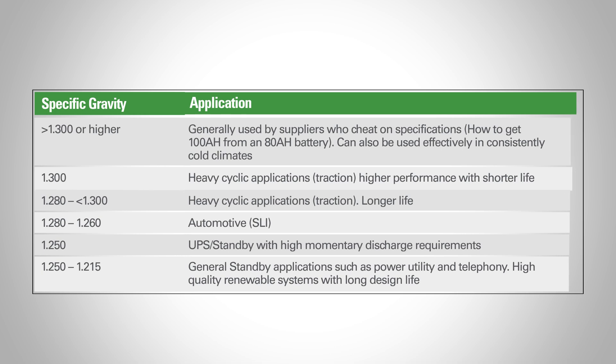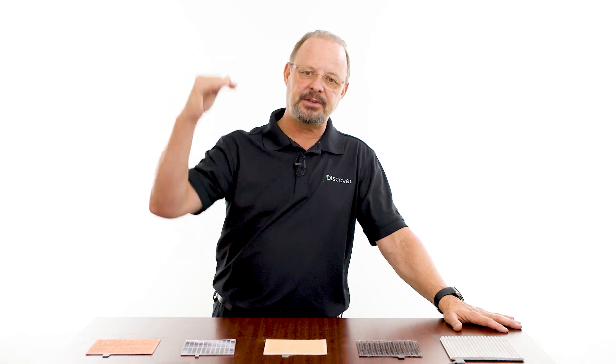Specific gravities higher than 1300 are generally used by suppliers who want to cheat on specifications. As mentioned earlier, you need the acid to be able to continue the discharge to get the total amount of capacity out of the active material in that battery.